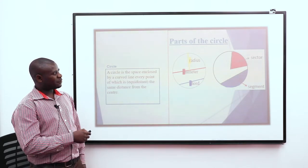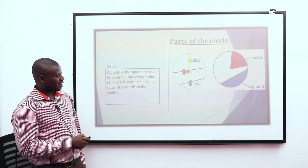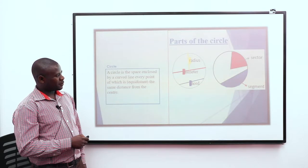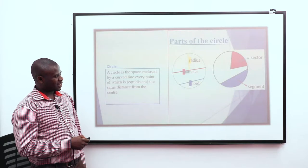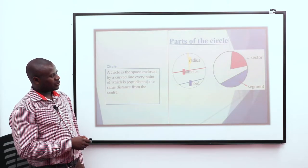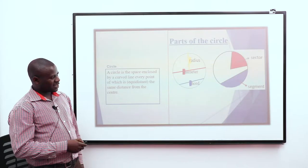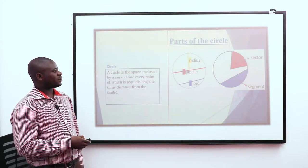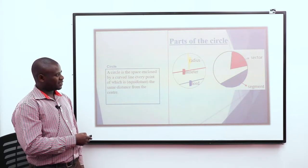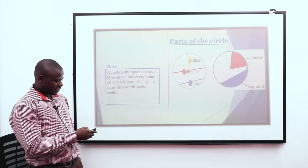For the purpose of this lesson, we shall look at some few parts of the circle, and majorly we shall look at the diameter. The diameter is the line passing through the center of the circle from one point at the circumference to the other. Then we shall also look at the sector, and lastly we have what we call the segment. Those are the parts we are going to use to find the relationship between angles subtended by an arc to the center and to the circumference.